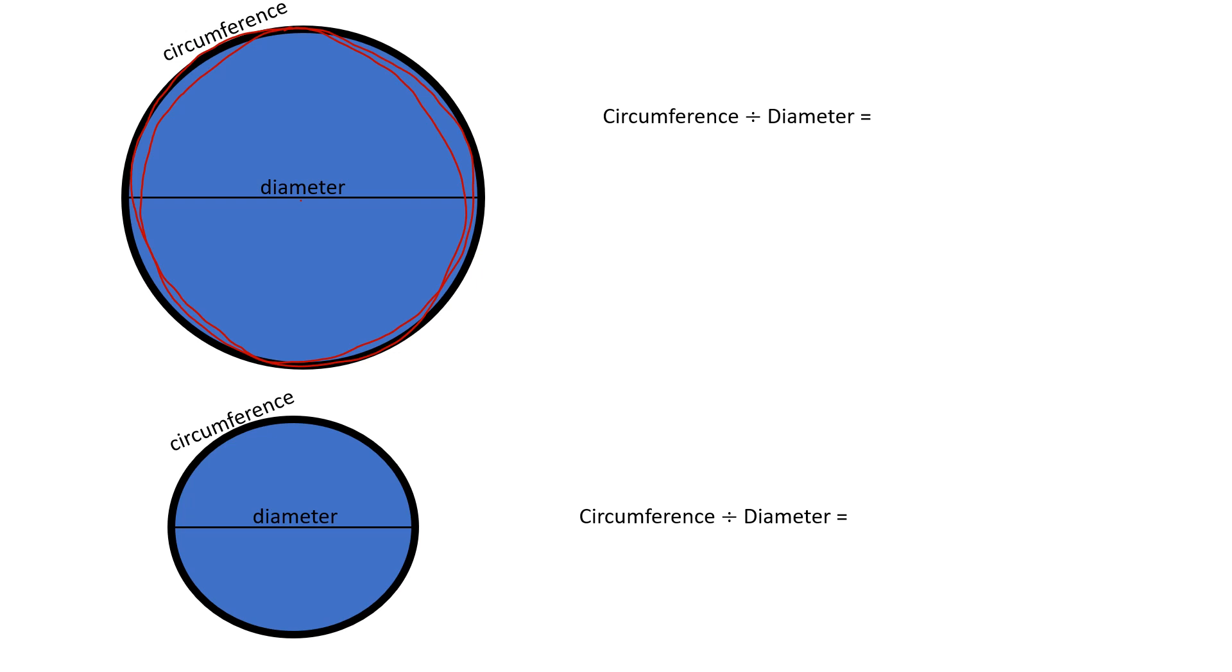Something cool happens when we take the circumference divided by diameter. It doesn't matter if it's this large circle up top or this small circle on the bottom. Circumference divided by diameter is the same number. It's an irrational number, about 3.1415, and it goes on forever and doesn't repeat itself, so it's hard to write. Because it's an irrational number, we assigned it the Greek letter pi.